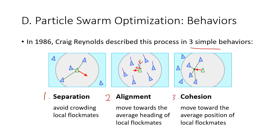The third behavior is cohesion. In cohesion, birds move towards the average position — or center of mass — of local flock mates. So if the other local flock mates are not inside a bird's circle of proximity, that bird will move to the left so that its circle will encompass the other flock mates.